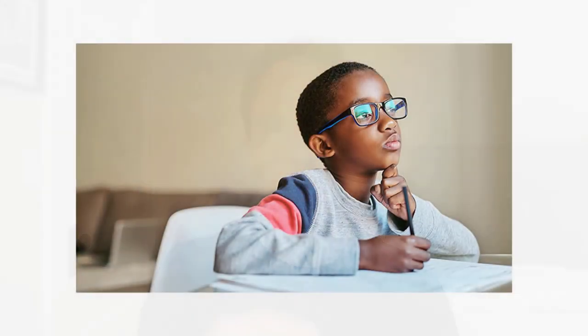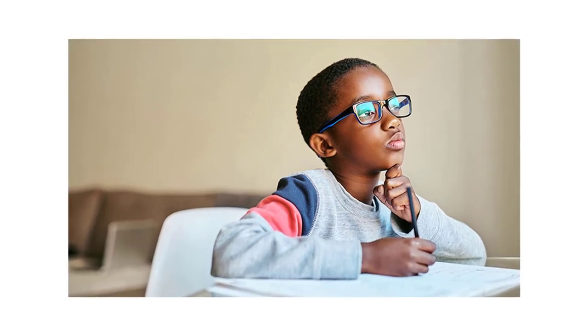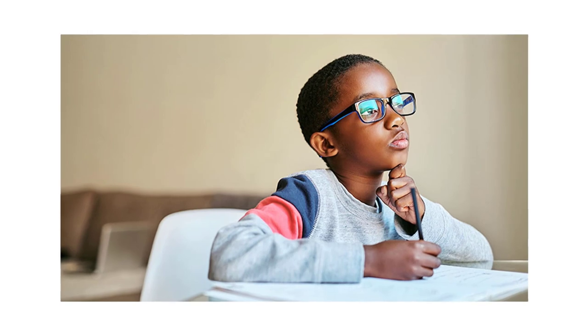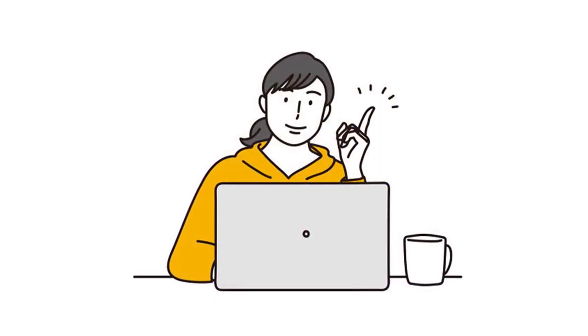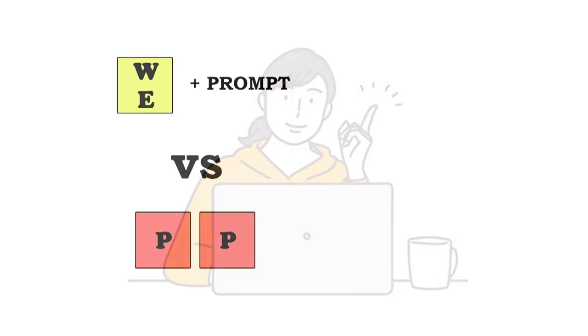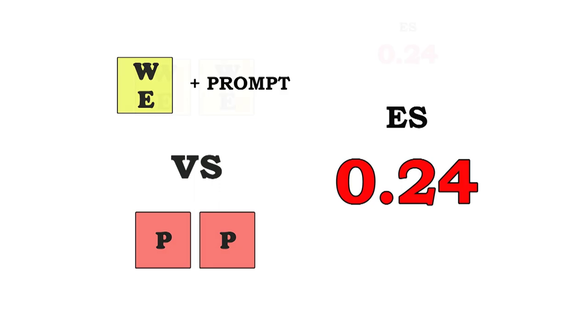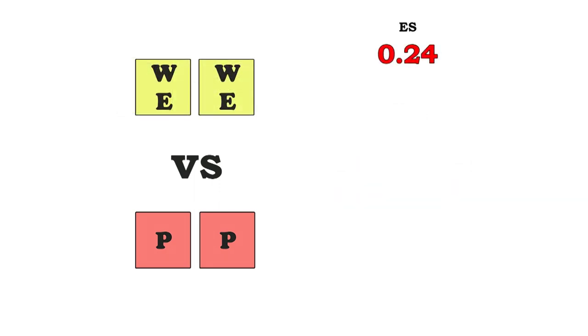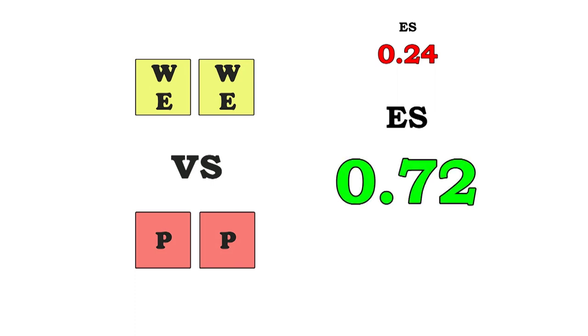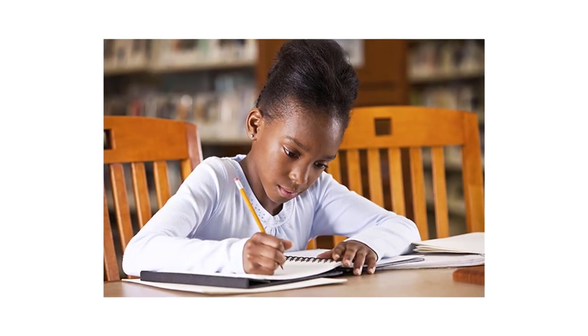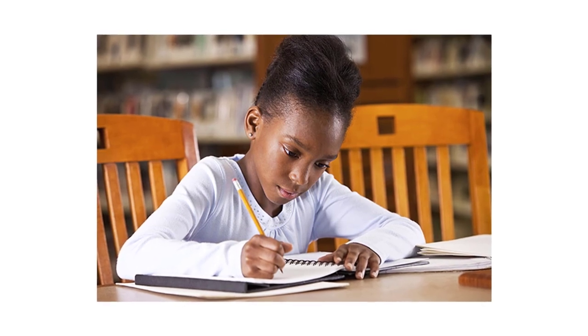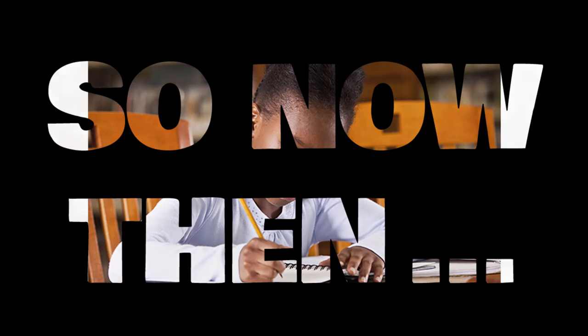Finally, they looked at including self-explanation prompts — things like 'Why do you think this worked?' or 'Can you put these steps into your own words?' — so students can home in on what's really important in the worked example. Does this work? When self-explanation prompts are included, the effect size drops to 0.24. When you simply show the worked examples without those prompts, the effect size jumps to 0.72. Again, when students are new to something, adding more information at once makes it harder to form long-term memories.